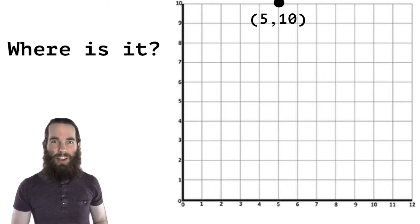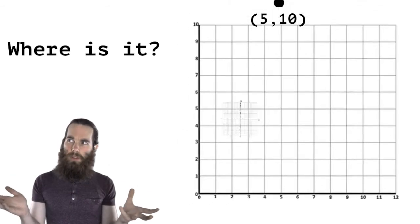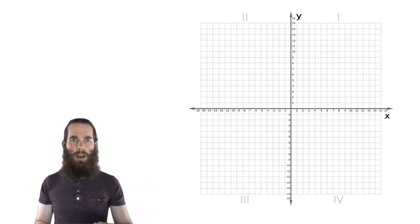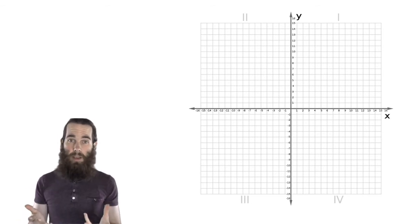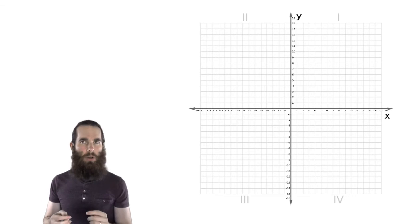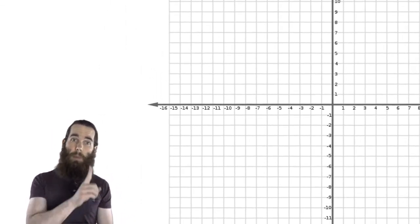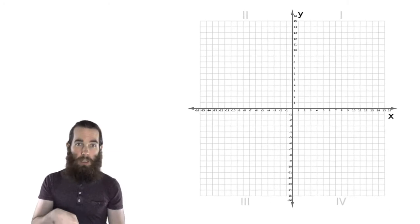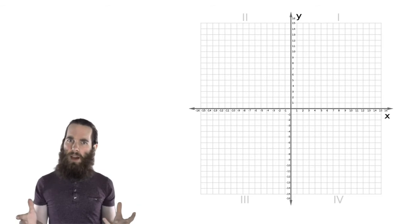This is a Cartesian plane. Now this is exactly the same, except we have negative numbers as well. So if we go to the left, our numbers are going to go negative, the right positive, up positive, down negative. Zero is in the very middle. We call that our origin point because that's where everything starts.